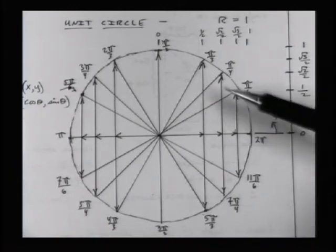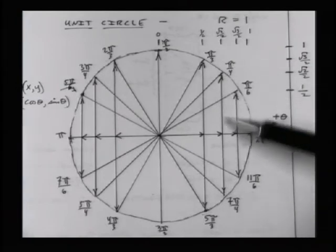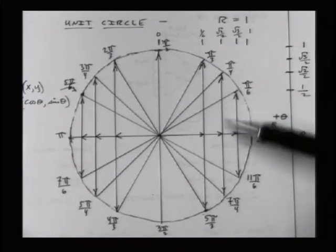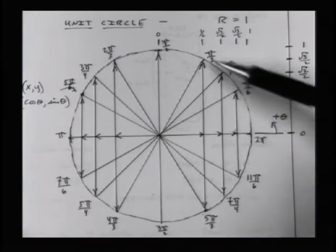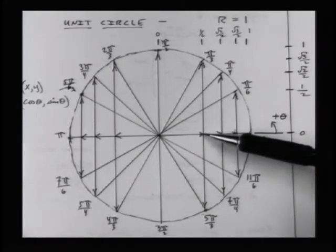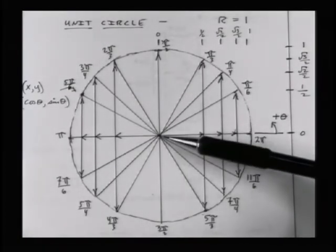Then when you get up to 45 degrees or pi over 4 radians, the height here becomes exactly square root of 2 over 2. And then similarly, when you move to 60 degrees, it's clear up here at square root of 3 over 2. And then finally, when you get to 90 degrees, it's clear up here at 1.